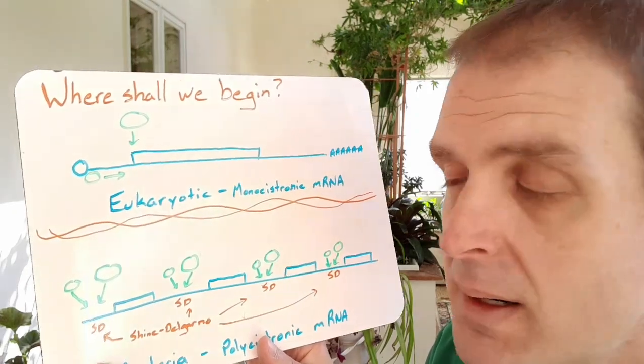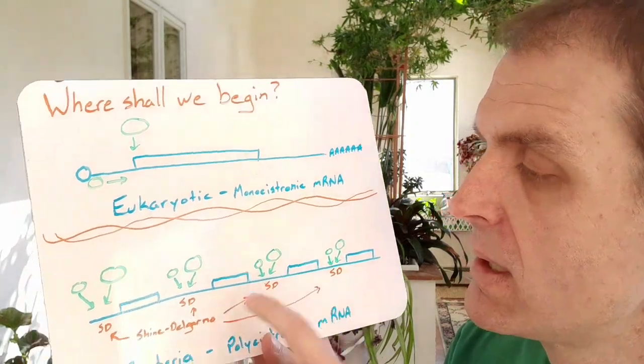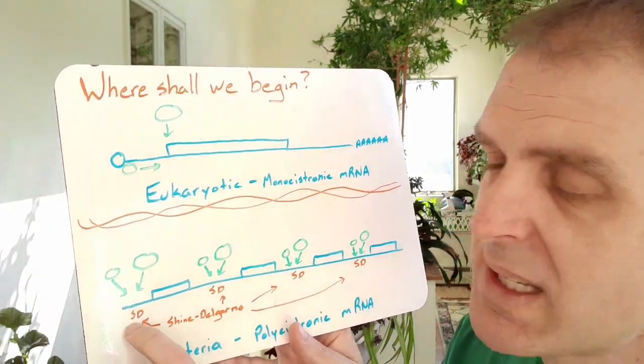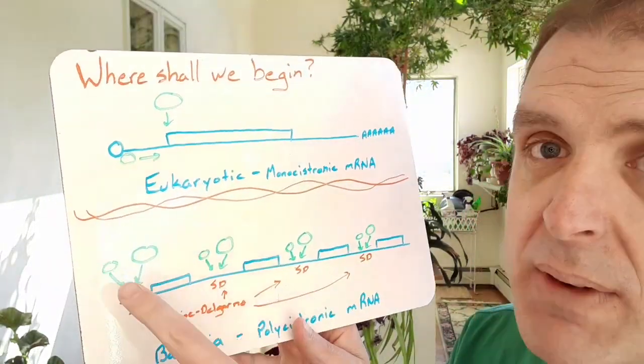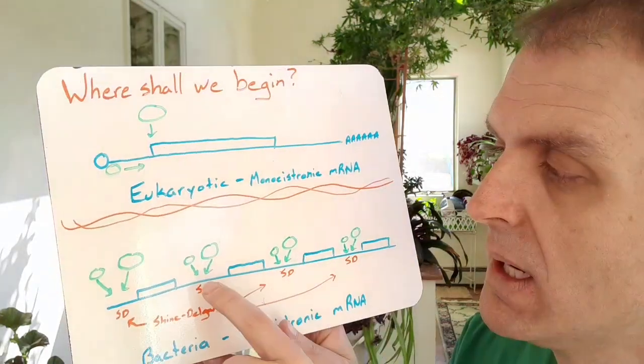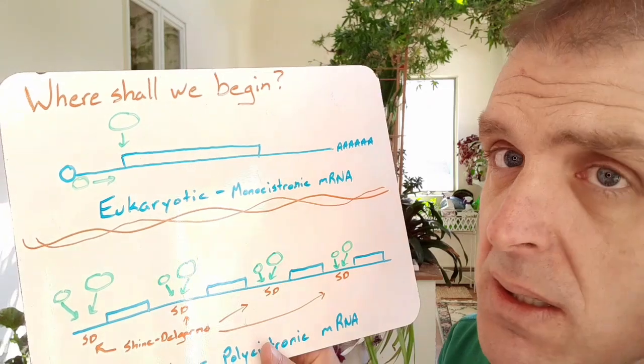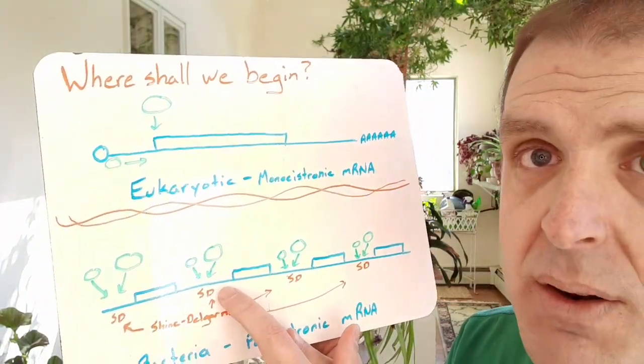In bacteria, because you have multiple protein coding sequences, it would be handy if there's multiple places along the RNA where the ribosomes could bind. So I've got the small and large subunits of the ribosomes and they're all coming down on this sequence in between each of these genes, these intergenic sequences called the Shine-Delgarno sequence.